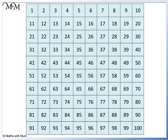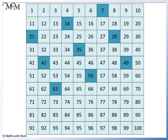1 seven is 7, 2 sevens are 14, 3 sevens are 21, 4 sevens are 28, 5 sevens are 35, 6 sevens are 42, 7 sevens are 49, 8 sevens are 56, 9 sevens are 63, 10 sevens are 70, 11 sevens are 77, 12 sevens are 84.